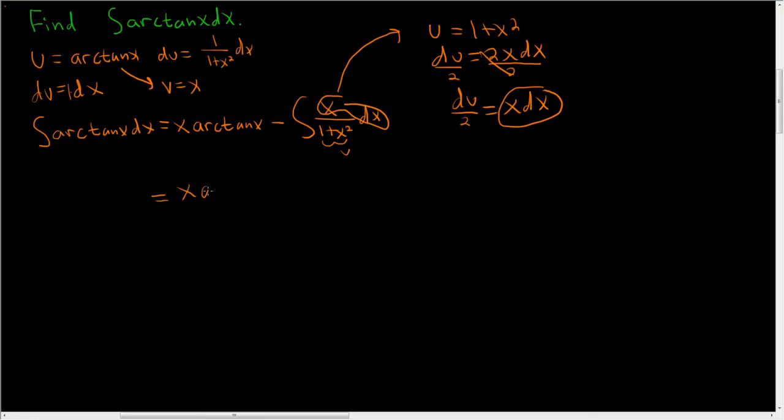We have x arctan x minus. Now this x dx is du over 2, so let's pull the 1 half outside. So we have du over u.